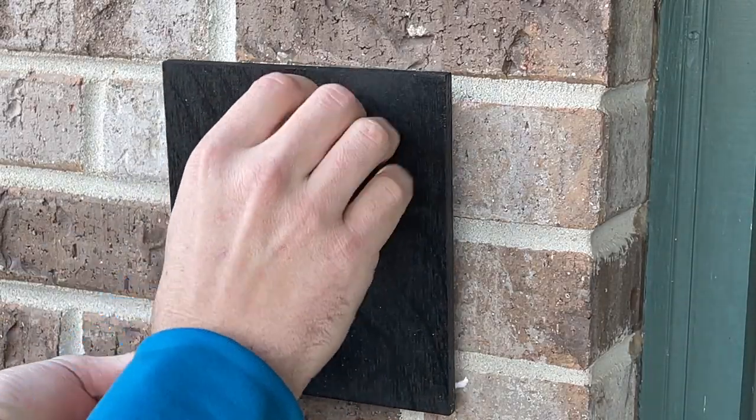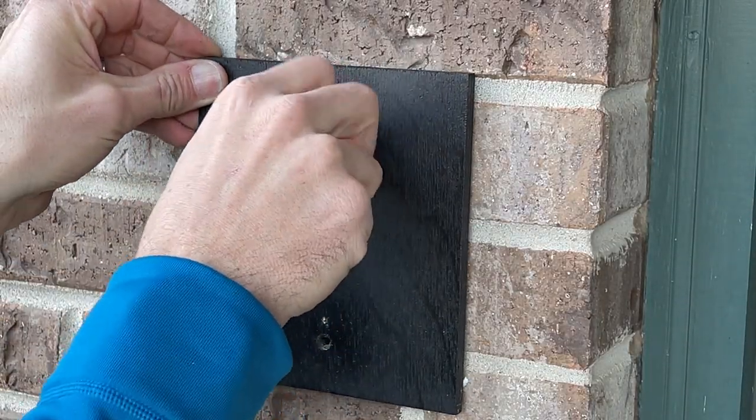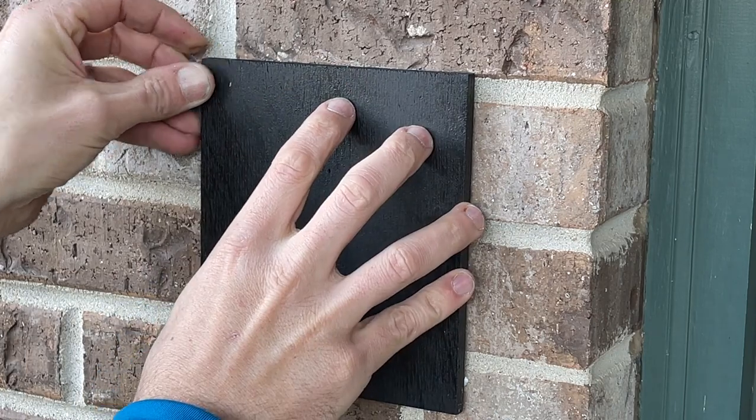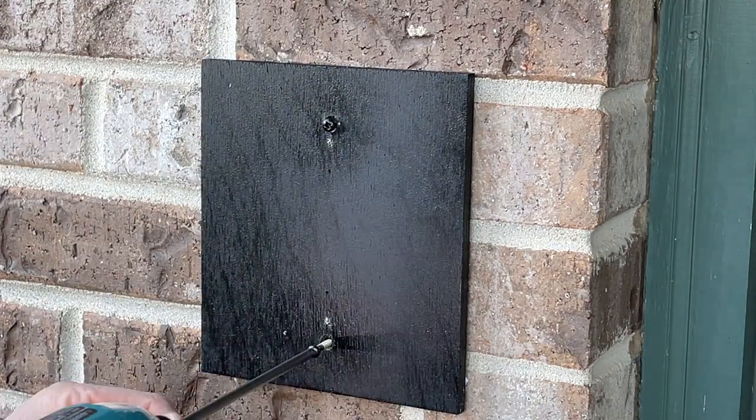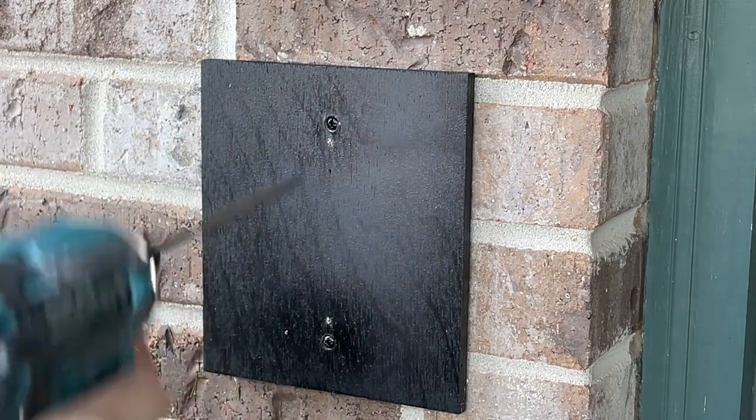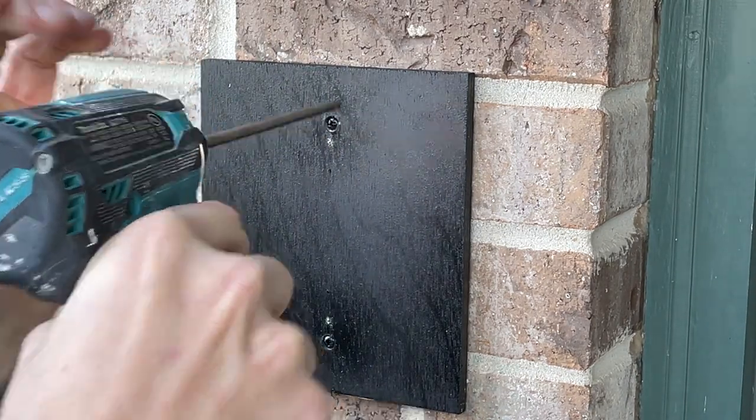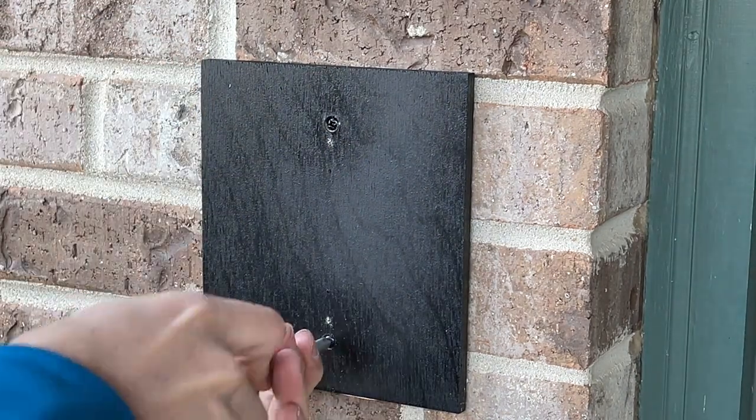With the top mounting screw through the hole, line everything up and start to thread it in, and then press that caulk against the brick. Then just drill in the bottom mounting screw, lightly tightening not to chip off the paint from the screws.